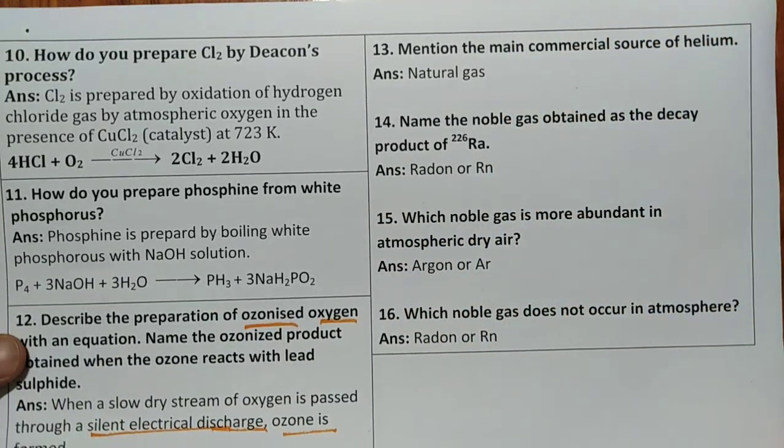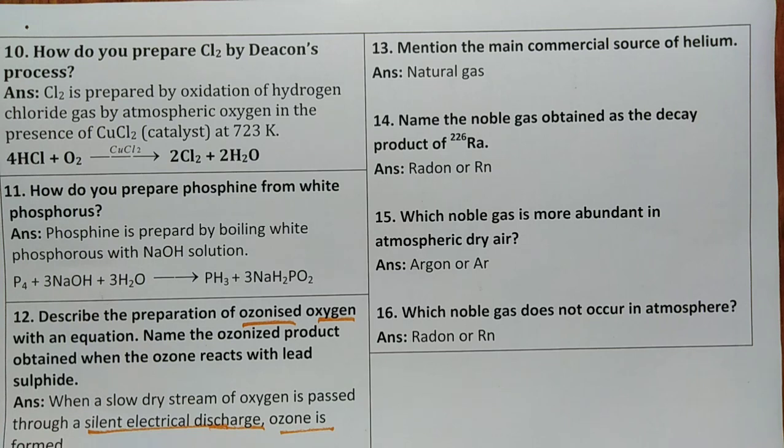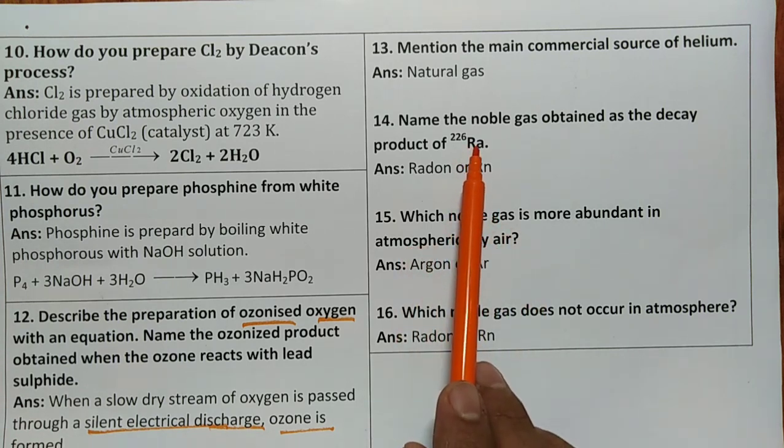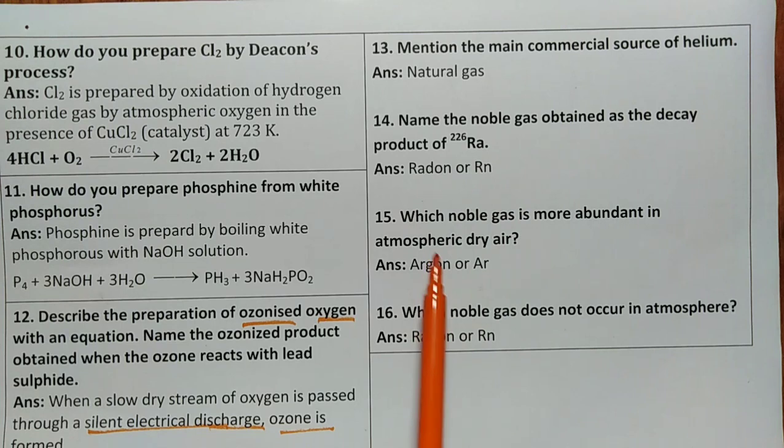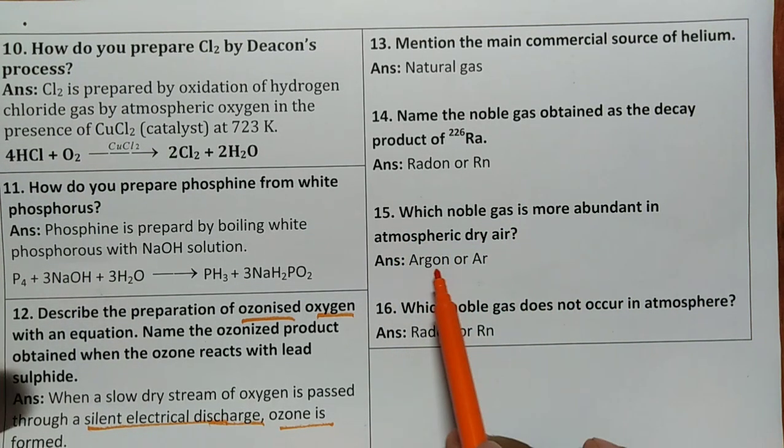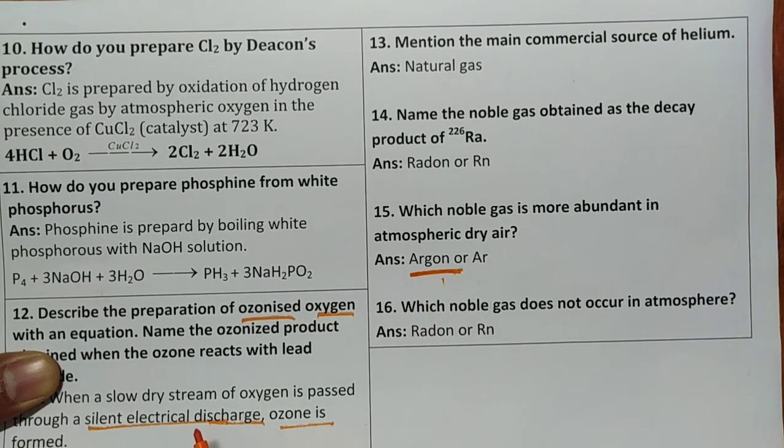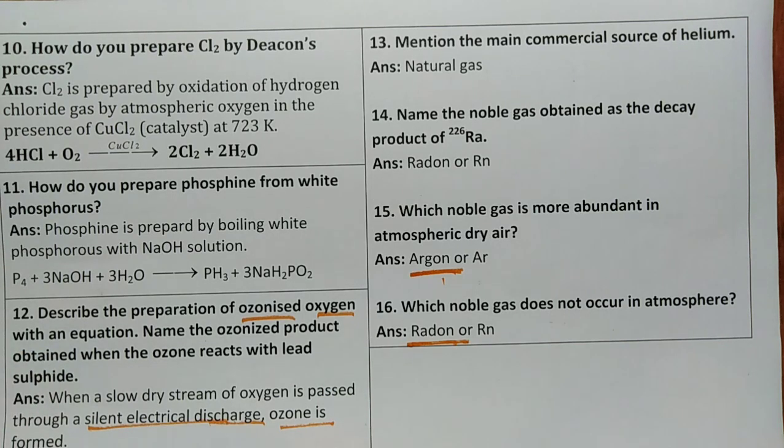These two marks questions are compulsory from previous year questions. Mention the main commercial source of helium: natural gas. Name the noble gas obtained in the decay product of 226 Ra: that is radon. Which noble gas is more abundant in the atmospheric dry air? Remember argon. Which noble gas does not occur in the atmosphere? Particularly radon. It is artificially prepared.